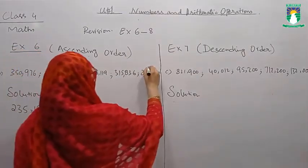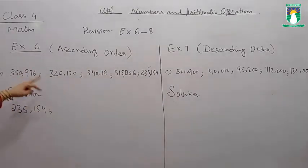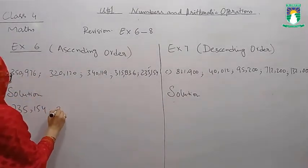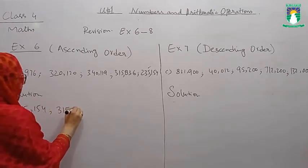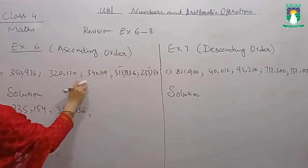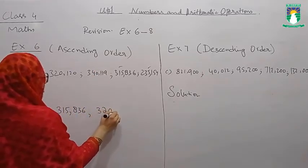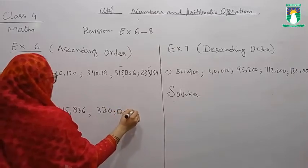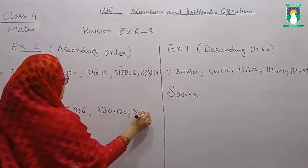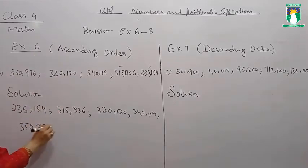Afterward we find 350, 340, 320. After 235, we come to know 350,836, then 340,320, 350. Then 340,119, and in the end 350,976. So students, this is the way we are going to arrange the numbers in ascending order.